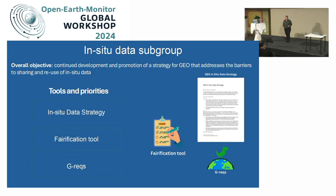So what are we doing? The data and knowledge working group is divided into different subgroups and lines of action. We have the in-situ data subgroup. In-situ data is the most challenging element in Earth observation for many different aspects. We are working on establishing an in-situ data strategy, highlighting all the challenges and actions GEO needs to take to advance in-situ data sharing, preservation, and usage across different applications.